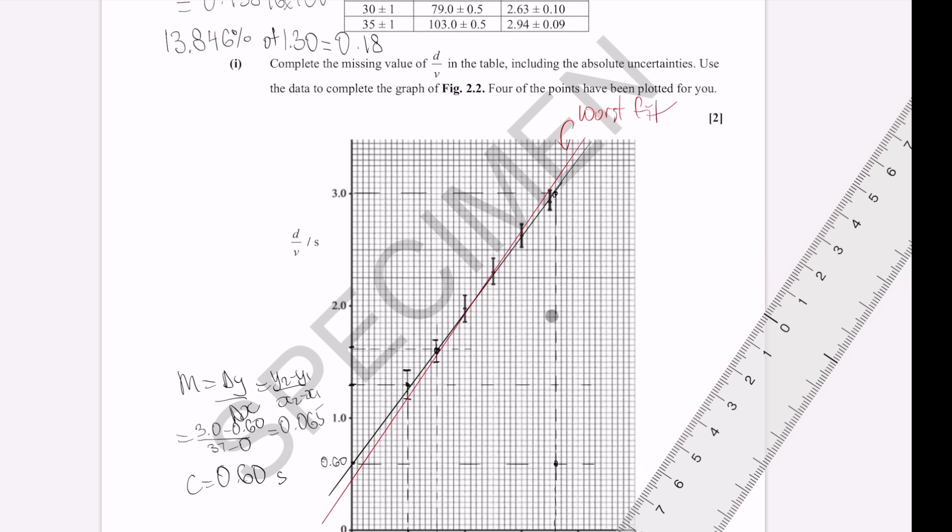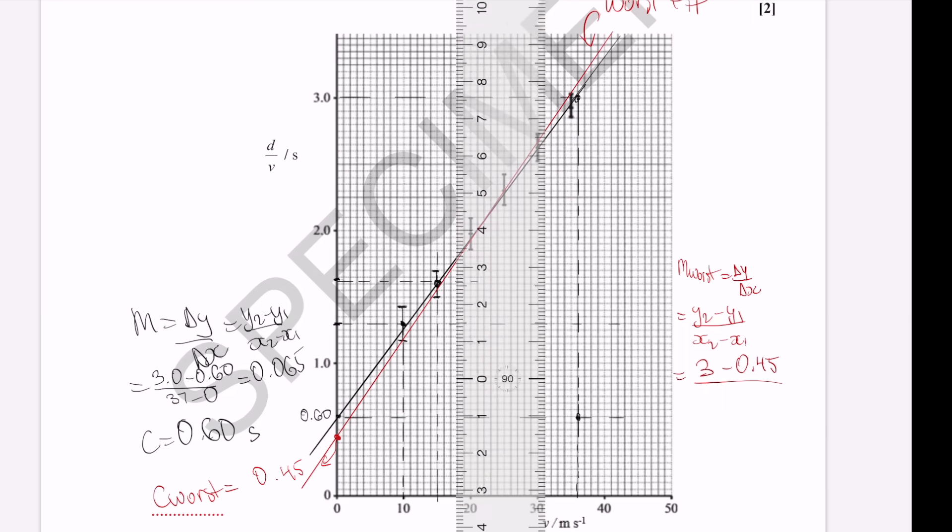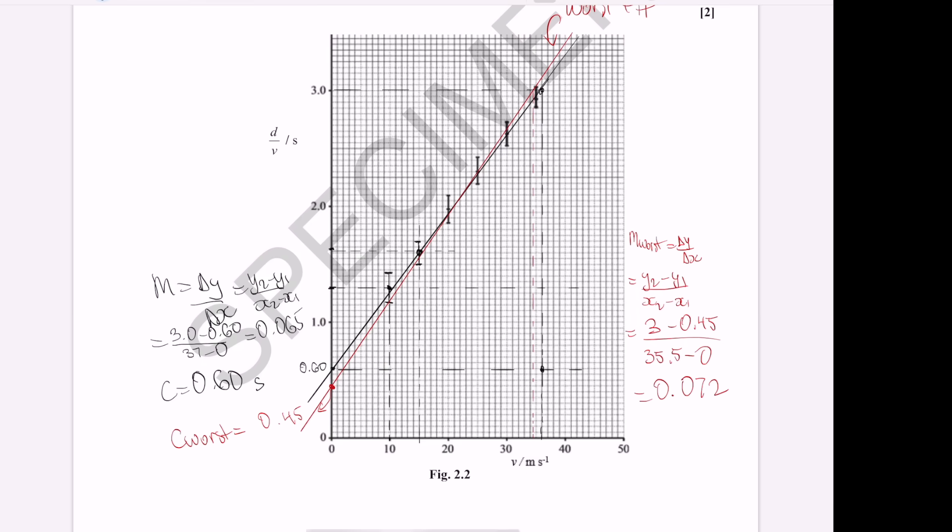If you're doing AQA, this here will be known as Gmax, but it's exactly the same thing. So, we have that. Now, shall we see if we can find the gradient of the line of worst fit? So, I'm just going to do this on the same page over here. I have these values here for the intercept and for the worst gradient.